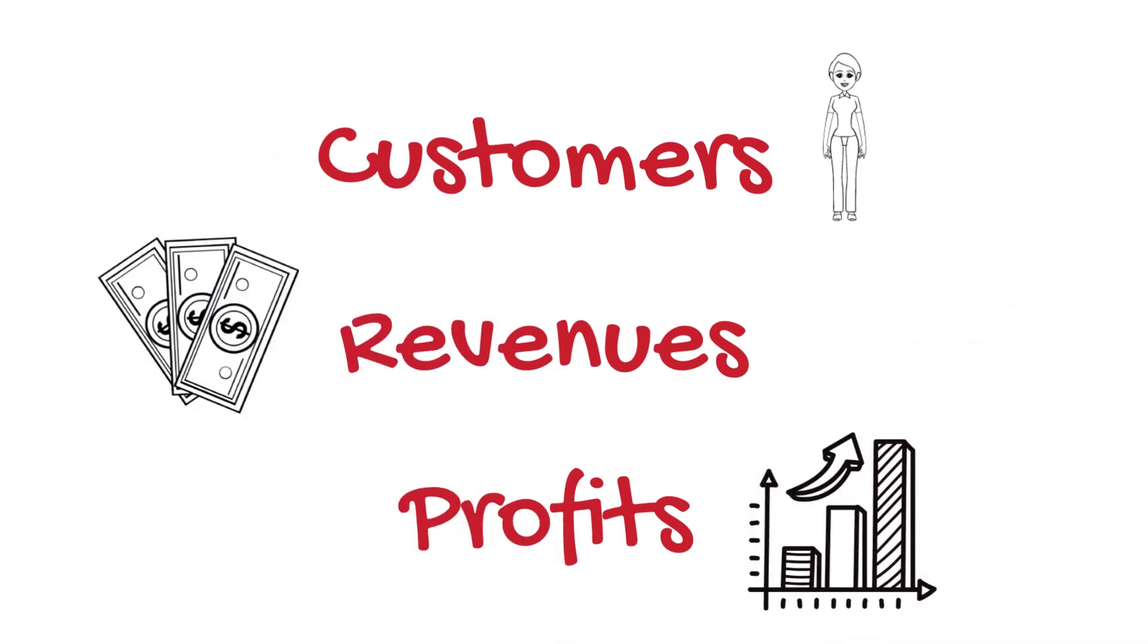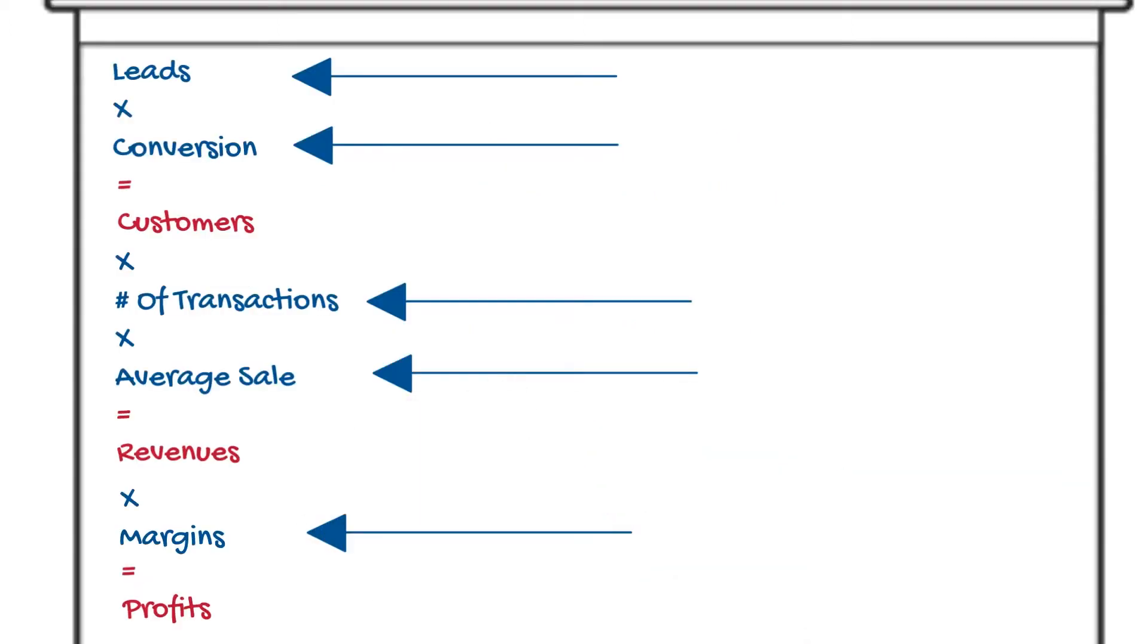Why? The most important? No. The least important. See, they're the results of the other five items. The most important items you can work on are your number of leads, your conversion rate, your repeat business or number of transactions, your average sale, and your margins.